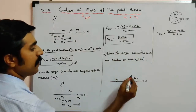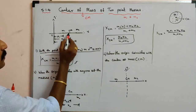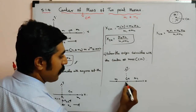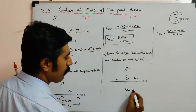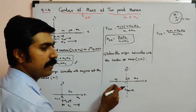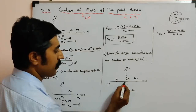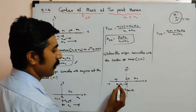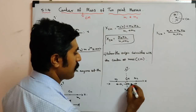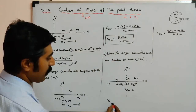When the origin coincides with the center of mass, then the center of mass is at the origin, so XCM equals zero. The mass M1 is on the negative x-axis at a distance x1, so its coordinate is minus x1. The mass M2 is on the positive x-axis at a distance x2, so its coordinate is plus x2.